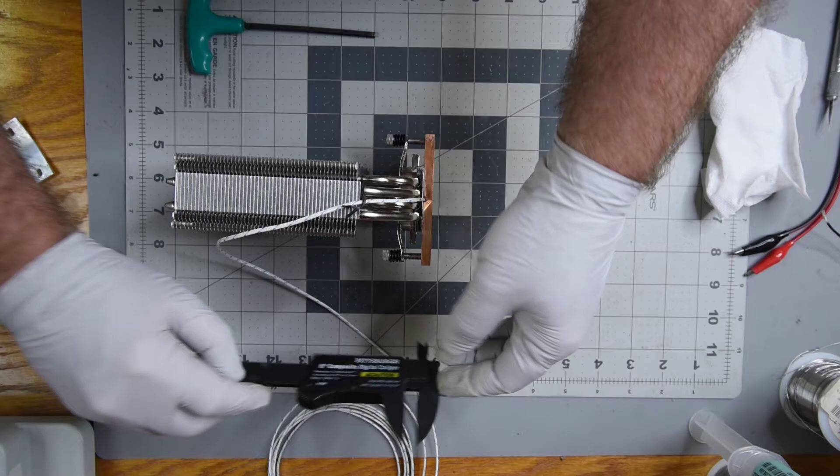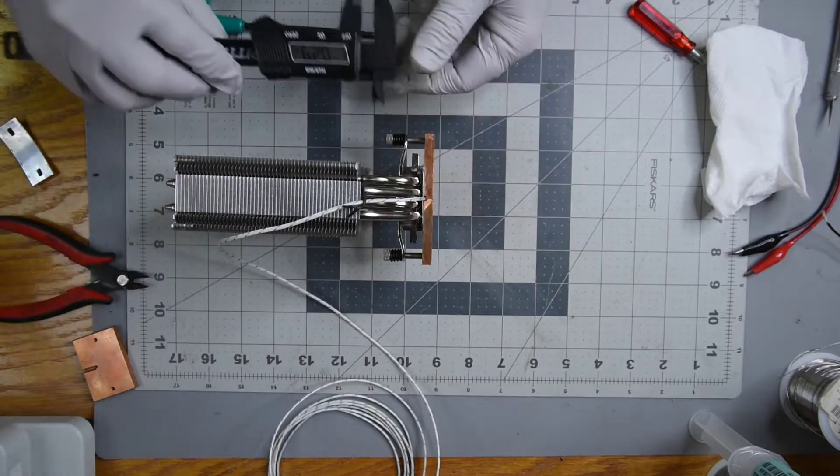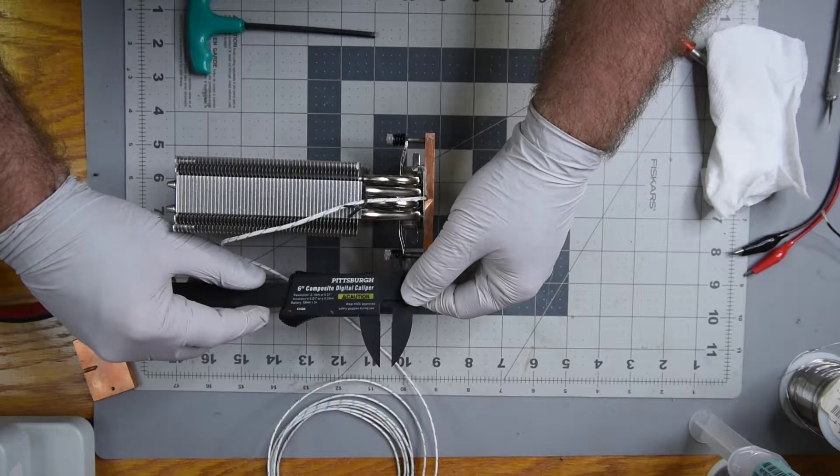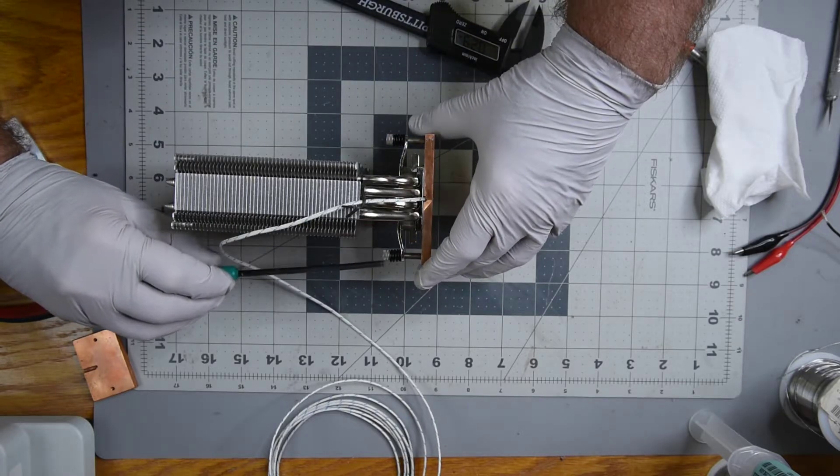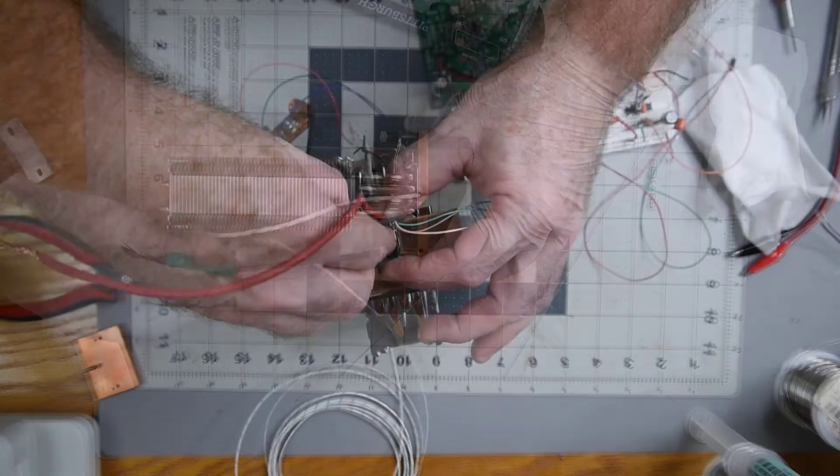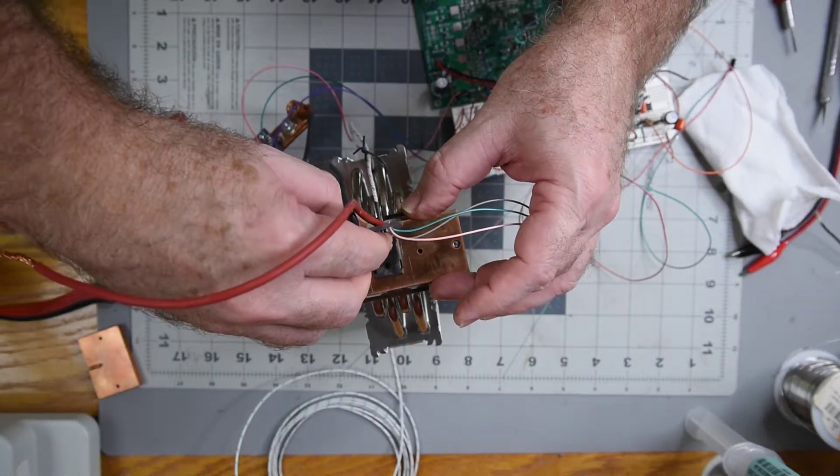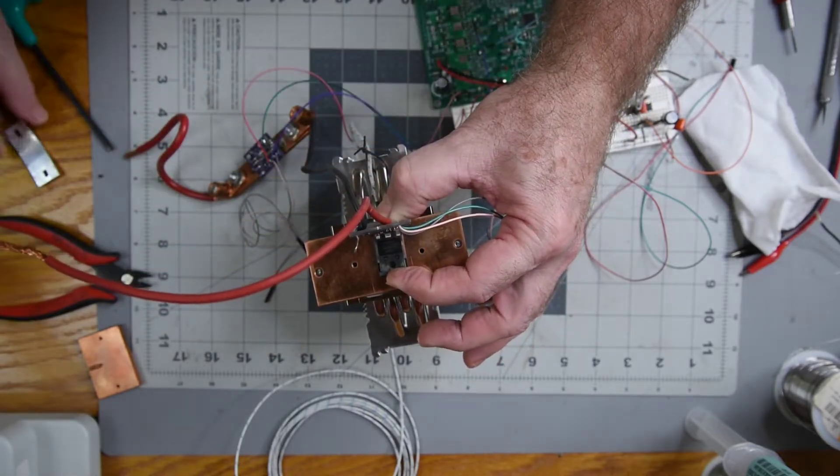I'll tighten up the screws so that the springs are compressed about the same on both sides. I'm mounting the MOSFET with the thermocouple contacting the lower center part of the case, where I think the die would be.